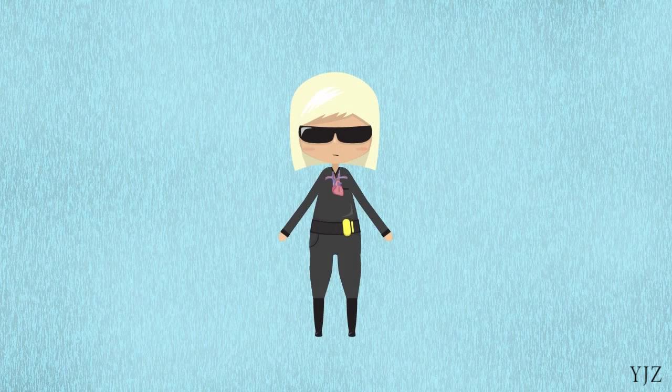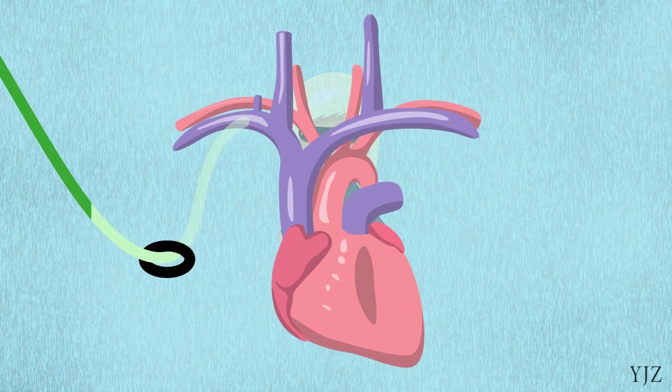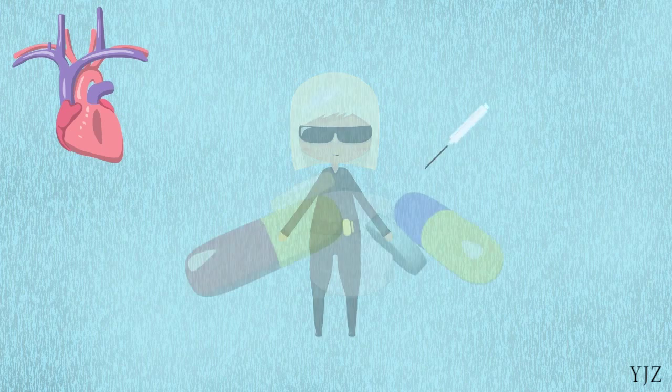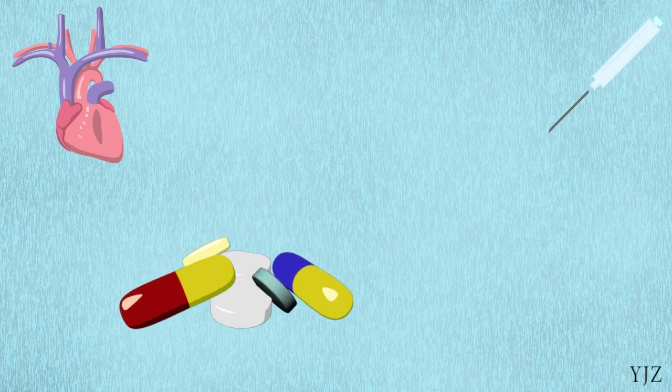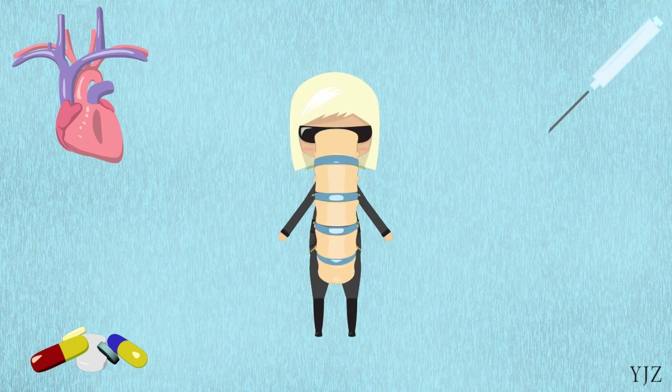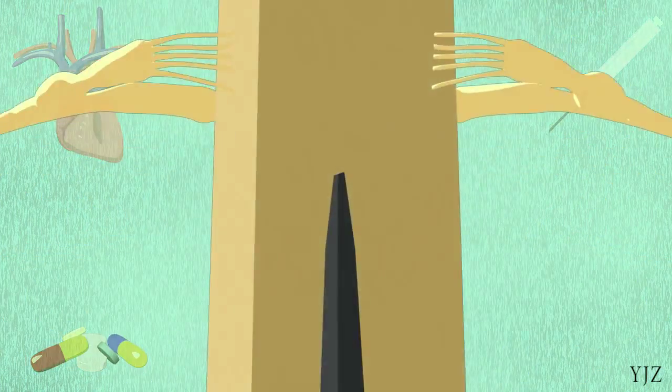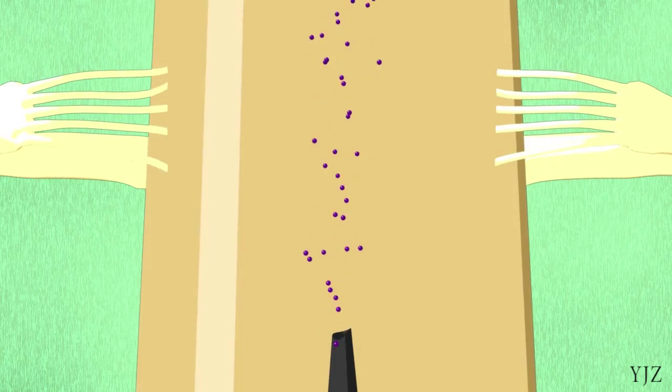Chemotherapy can be administered intravenously, intramuscularly, orally, or into the cerebral spinal fluid through a lumbar puncture to treat or prevent the spread of leukemia cells into the central nervous system.